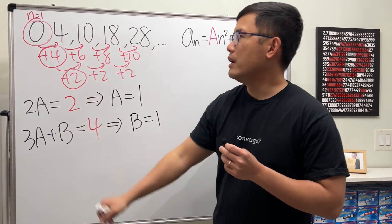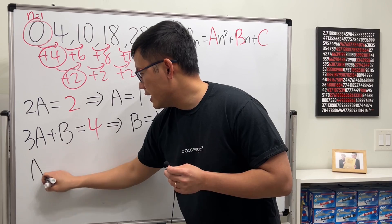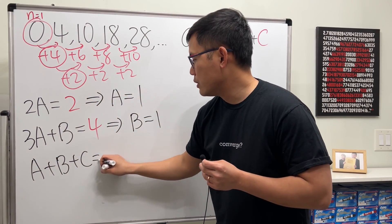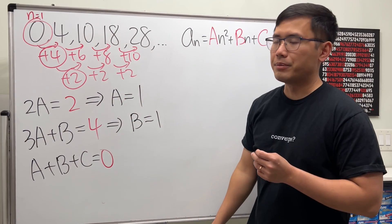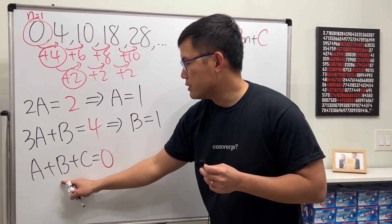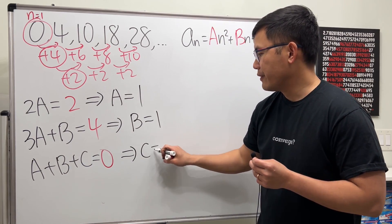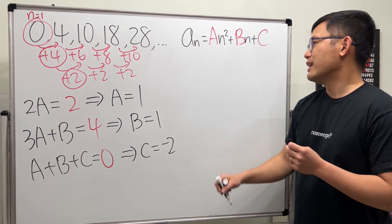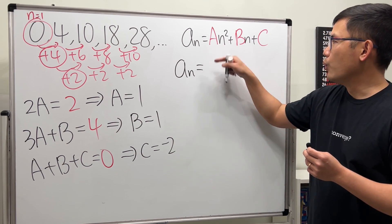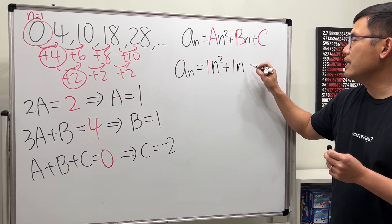Lastly, we use the first term. Remember, when n equals one, we get a plus b plus c, and we set that equal to the first number in the sequence. Since a is one and b is one, that gives us two, so c must be negative two.